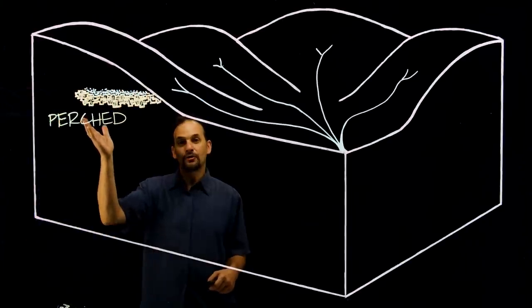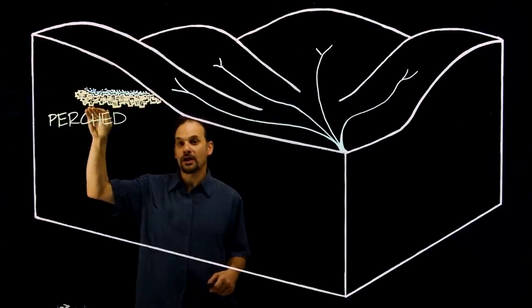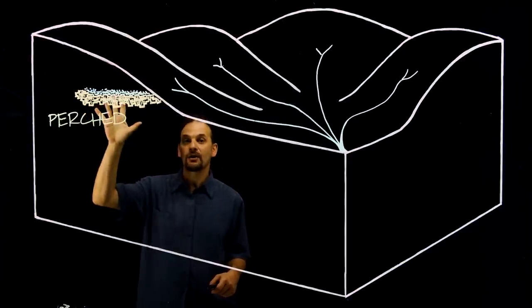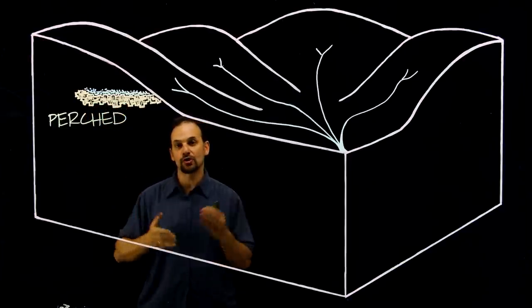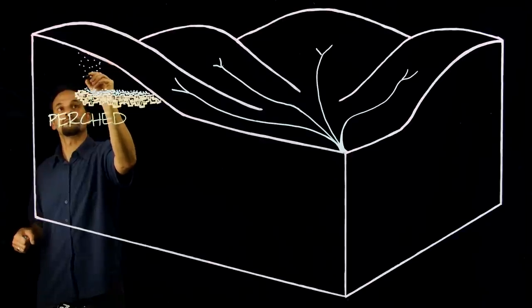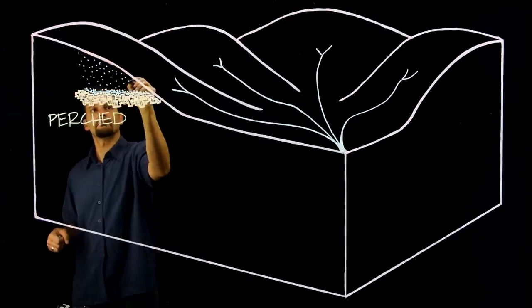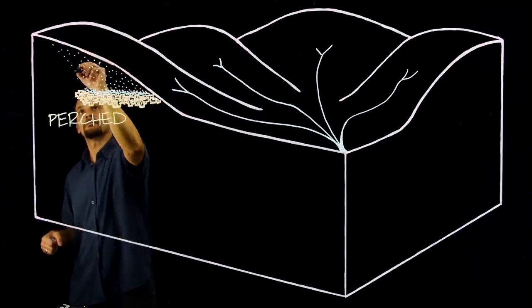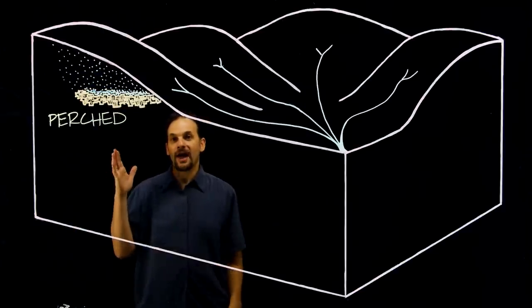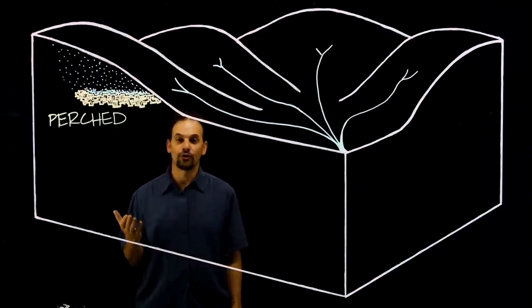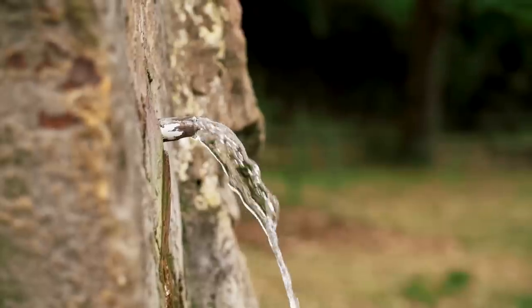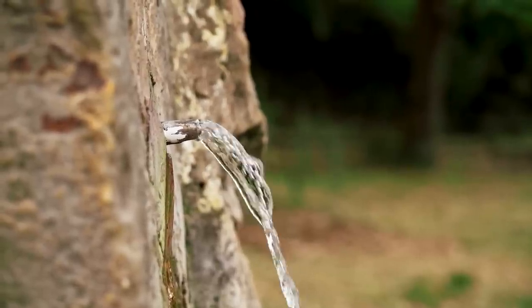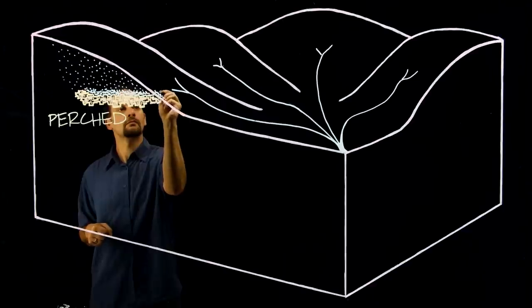A perched aquifer is caused by a layer of impermeable rock strata that's set higher up in the landscape than any other larger water table. The area above the perch is where the water comes from that feeds this aquifer, and a lot of times that water will surface on the ground in the form of a spring. Did you ever see a spring popping out in the middle of a hill? Probably from a perched aquifer.